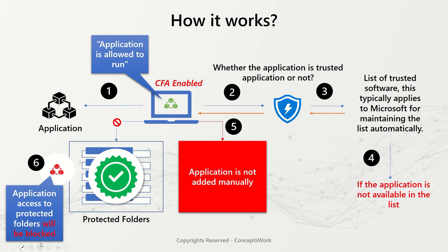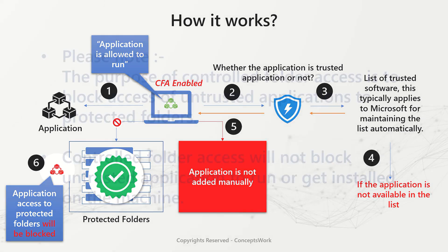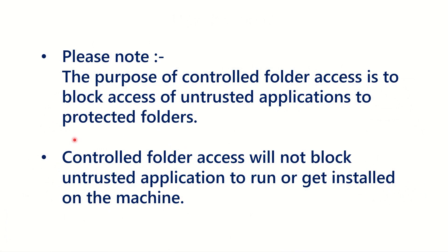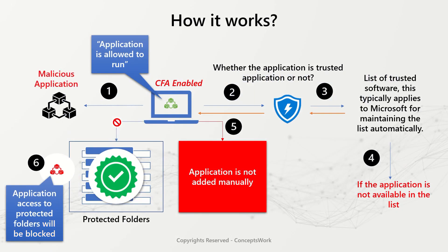This is something very specific to controlled folder access, and you must make a note of this. The purpose of controlled folder access is to block access of untrusted applications to protected folders. Controlled folder access will not block untrusted applications from either running or getting installed on the machine — it is only there to protect the folders you have defined as protected folders. You can replace 'application' in this example with malicious applications or threats like ransomware.